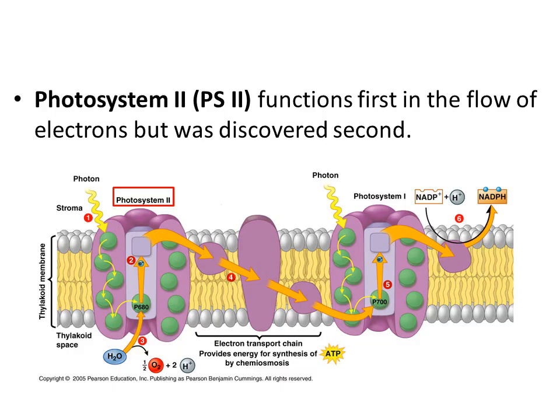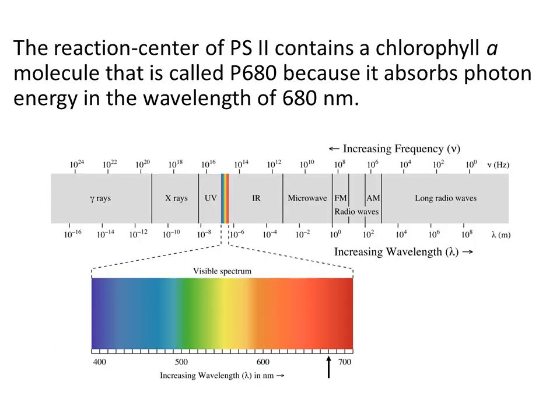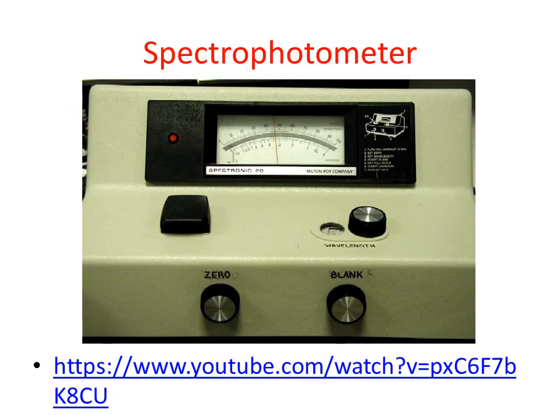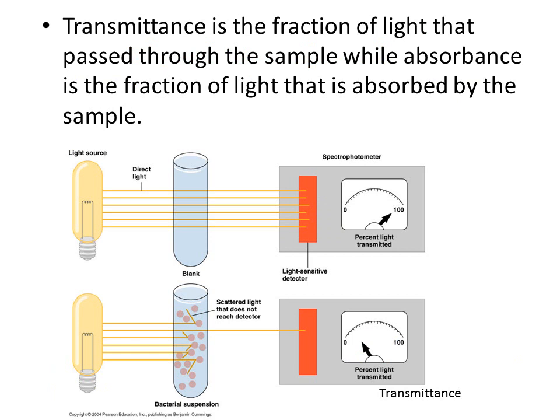The first photosystem we'll specifically talk about is photosystem 2. Photosystem 2 functions first in the linear flow of electrons, but it was discovered second. The reaction center of PS2 contains a chlorophyll A molecule called P680. It is called P680 because it absorbs best the wavelength of 680 nanometers. To determine which wavelength it absorbs best, they use a spectrophotometer. Using this spectrophotometer, we can record transmittance or absorbance. Transmittance is the fraction of light that passes through the sample, while absorbance is the fraction of light that is absorbed by the sample. Our sample being discussed is chlorophyll A.